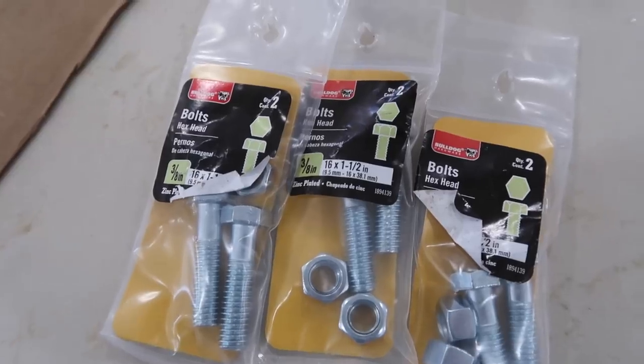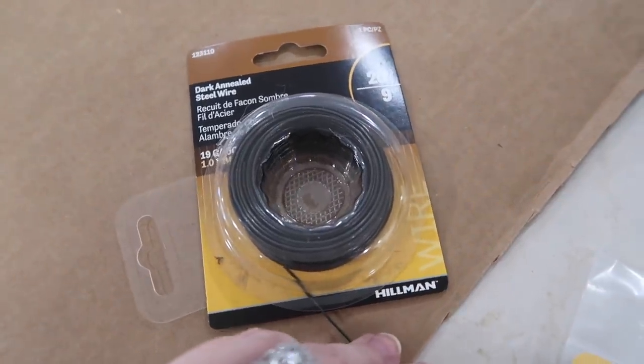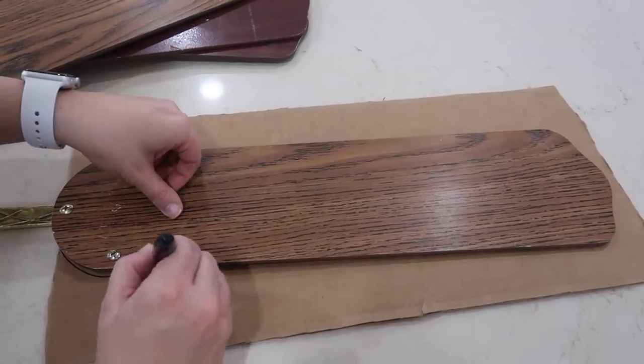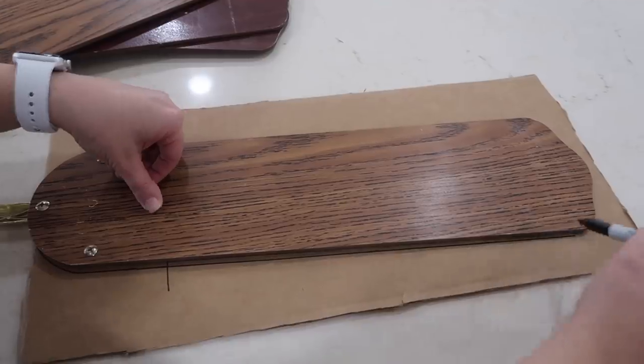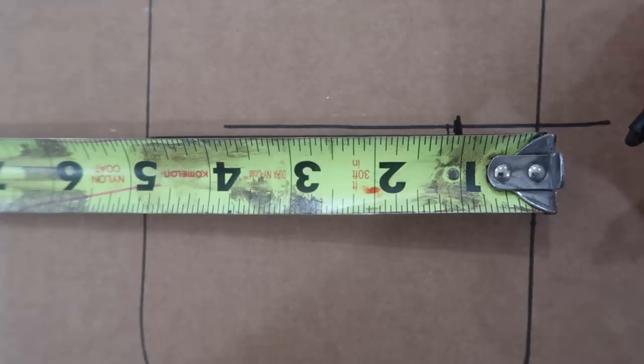These bolts are extra and so is this wire, but I will explain to you why I wanted to add them in at the end. As you can see here, I'm just tracing the fan blade onto some cardboard. I need to kind of get a stencil so I know what shape I need to cut each of these blades.